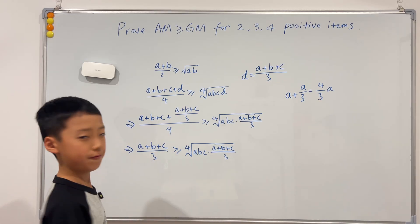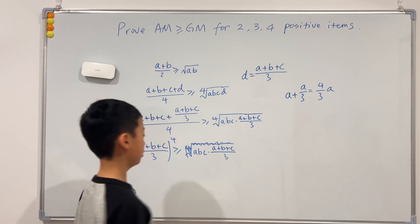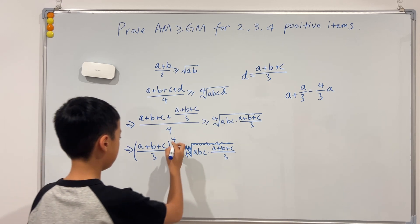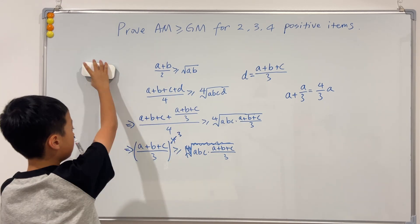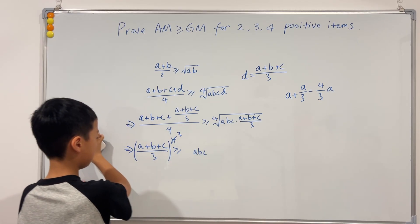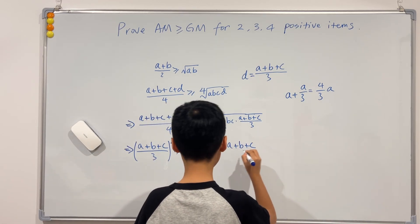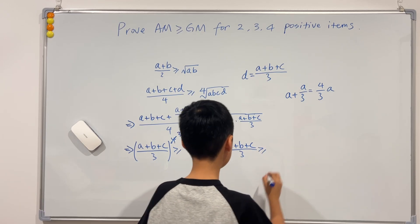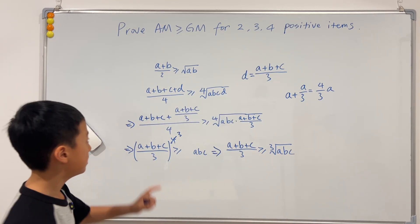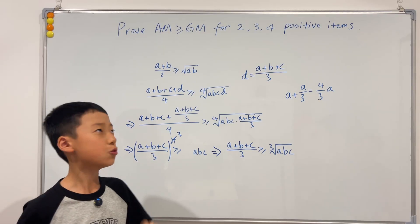Treating a + b + c as one number, the top becomes (4/3)(a+b+c), and dividing by 4 gives (a+b+c)/3. So we get (a+b+c)/3 ≥ that expression. Taking the fourth power of both sides, then dividing out the cube, and finally taking the cube root of both sides, we conclude that (a + b + c) / 3 ≥ the cube root of abc. Proved.